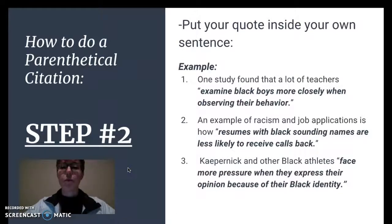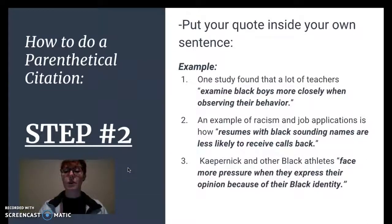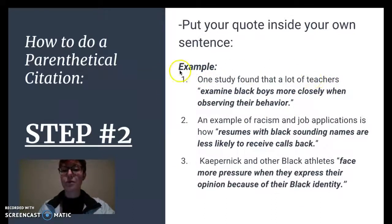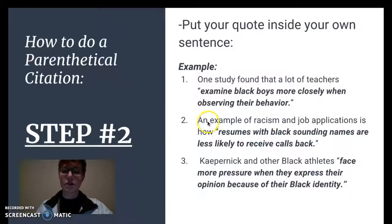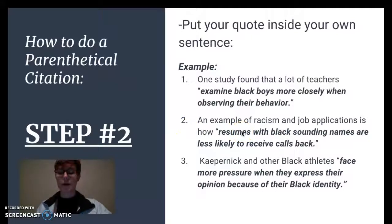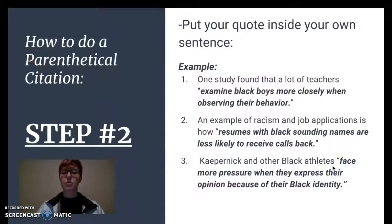For step two, we need to take those underlined points and put them inside our own sentence. For example, for number one, I kept the part that I underlined but I reframed the beginning — I said 'one study found that a lot of teachers' and then I have the part with my quote. For the second one, I put my own words: 'an example of racism in job applications is how' and then I kept the quoted part. Same thing with Kaepernick and other black athletes — kept the quoted part.